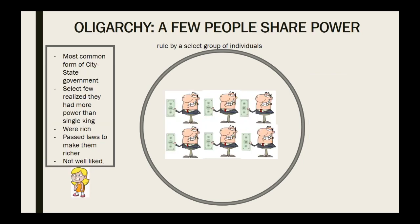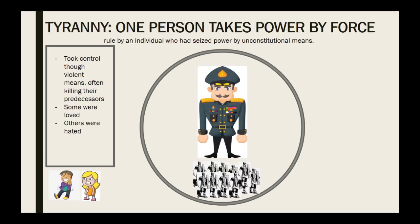Eventually, though, these aristocrats decided that they had more power than the king. They were rich. So eventually they started to take power away from kingdoms. The oligarchs are a few people who share the power. They were rich, and they passed laws that made them richer. As you can see here by our citizen, they weren't well-liked. The citizens would work really hard, and the oligarchs would just pass more laws to put more money in their pocket.